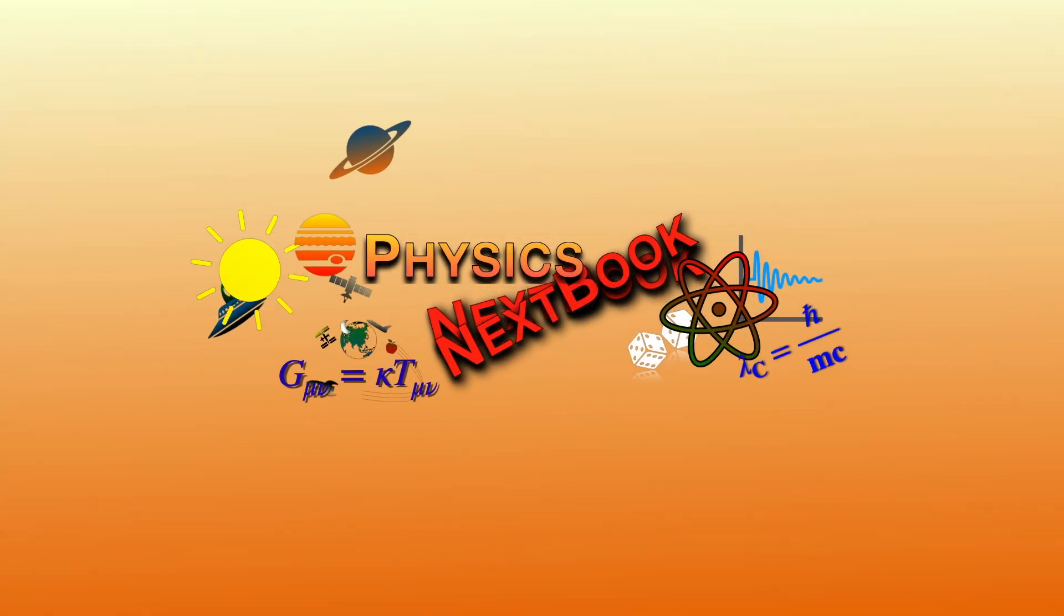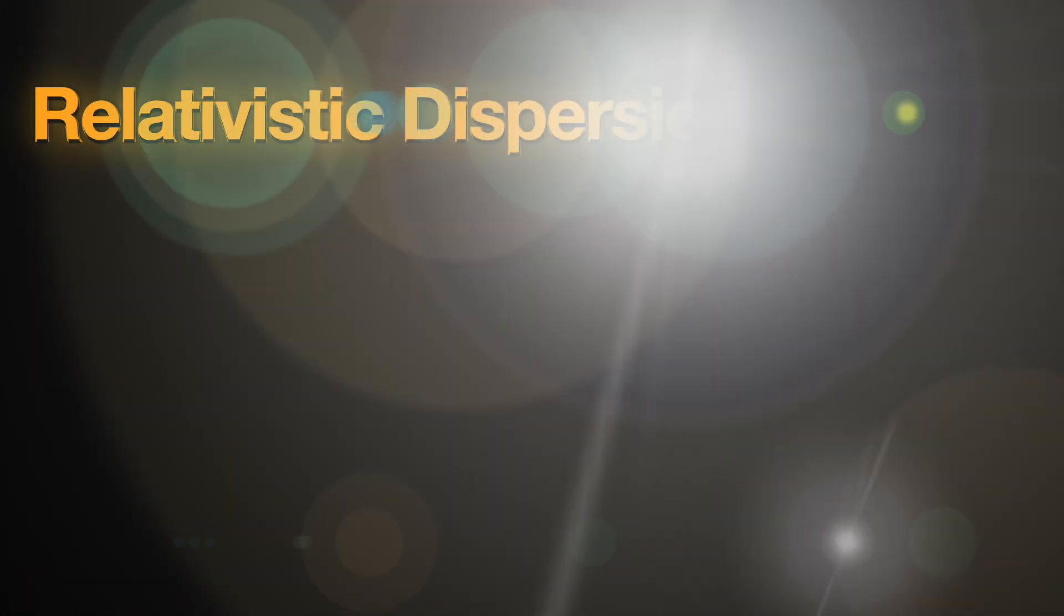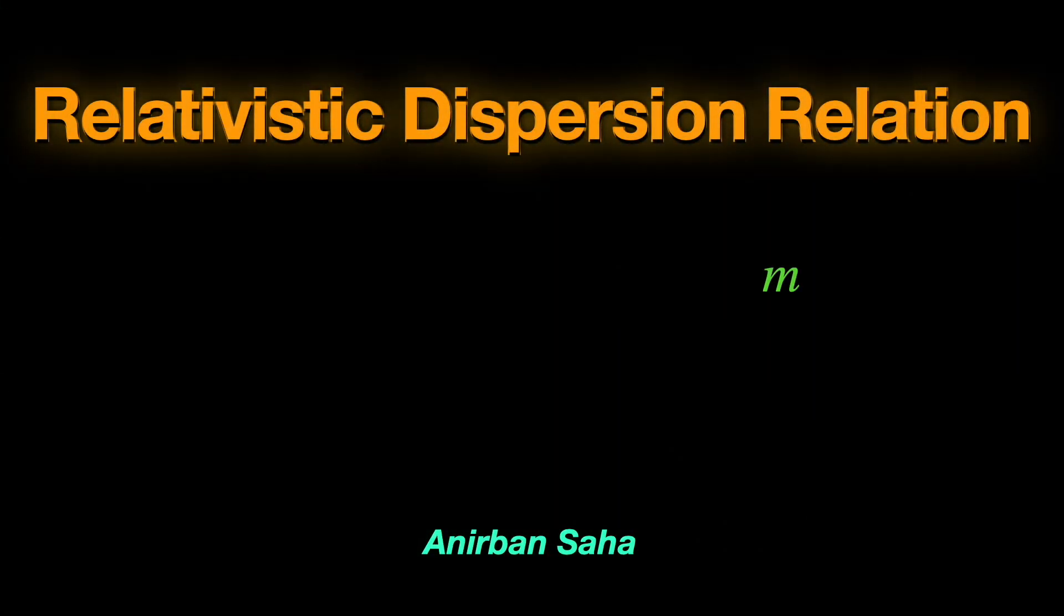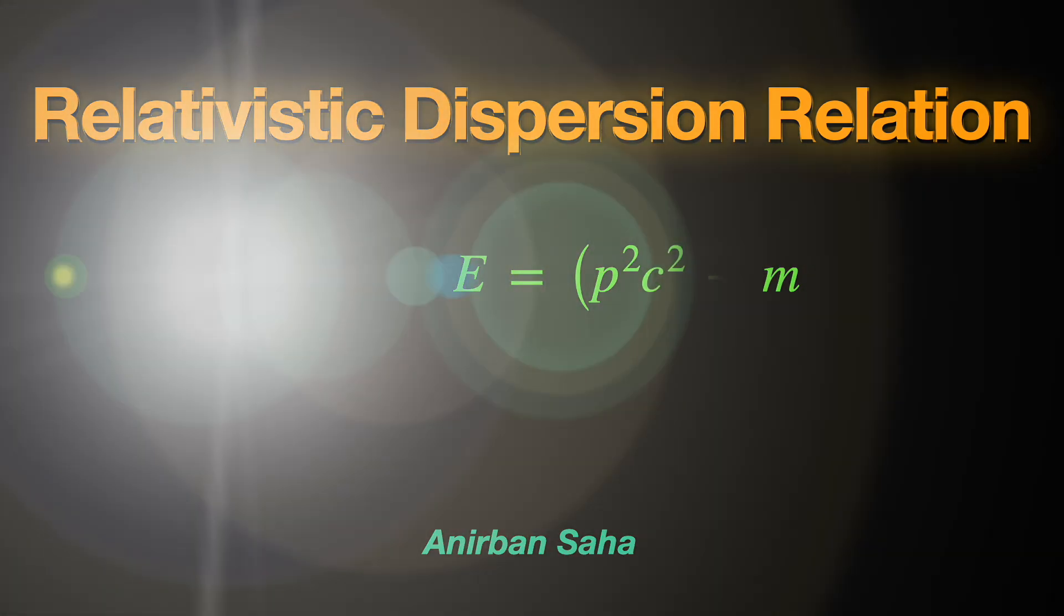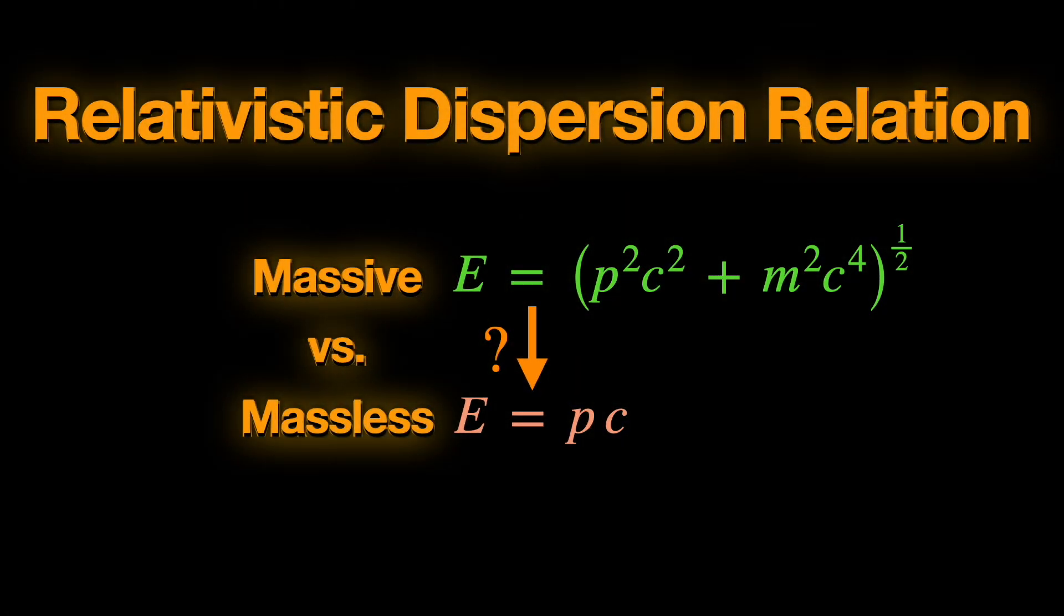Welcome to Physics Next Book. In this video, we shall see how the massive dispersion relation that connects the rest mass m and momentum p of a relativistic particle to its total energy E is abused to arrive at the dispersion relation of a photon, which is a massless quantum mechanical particle.